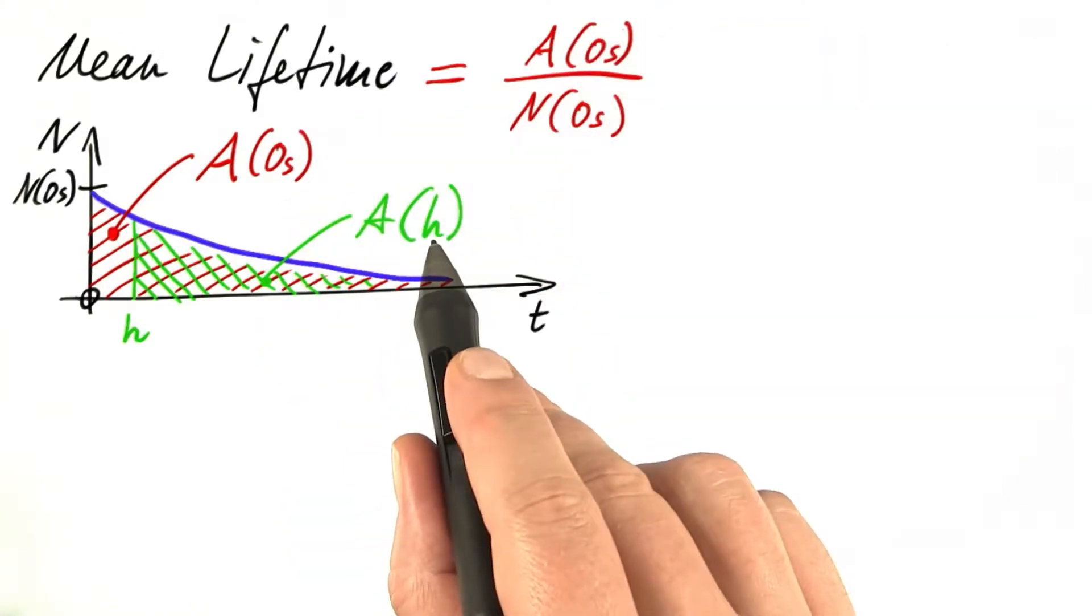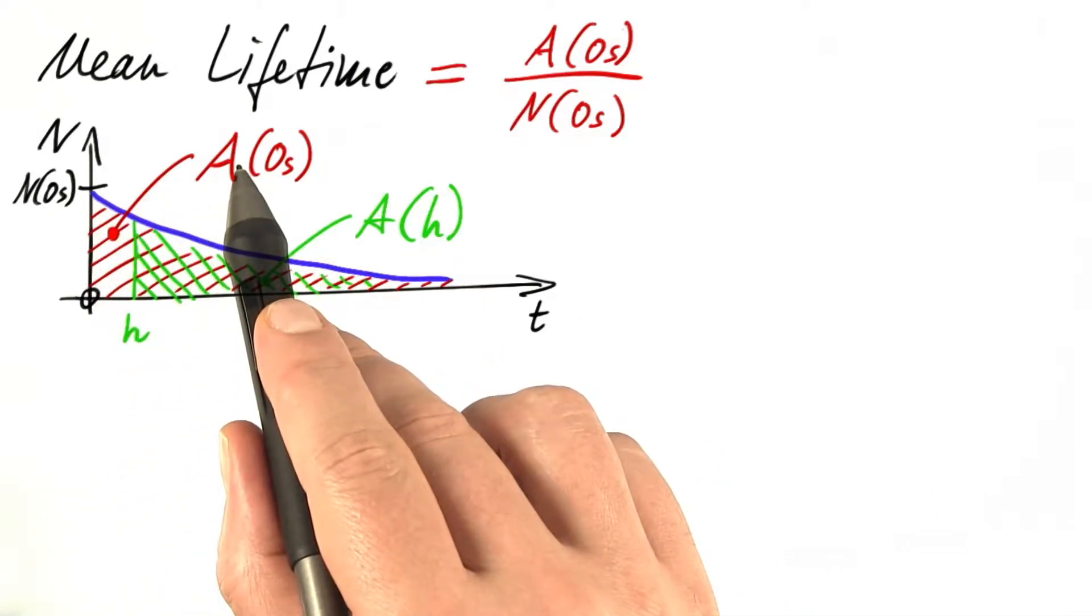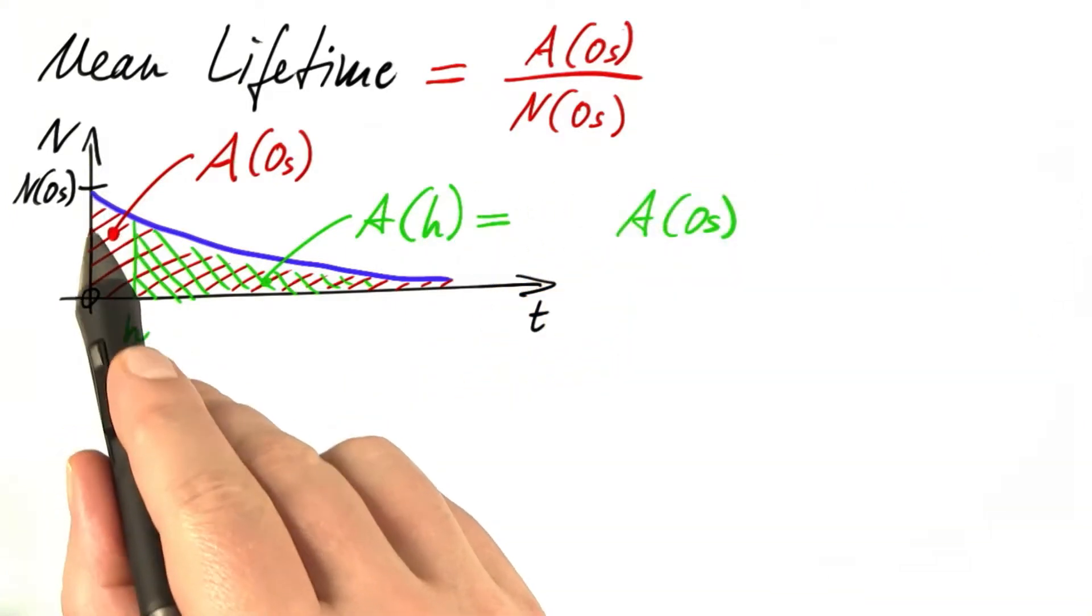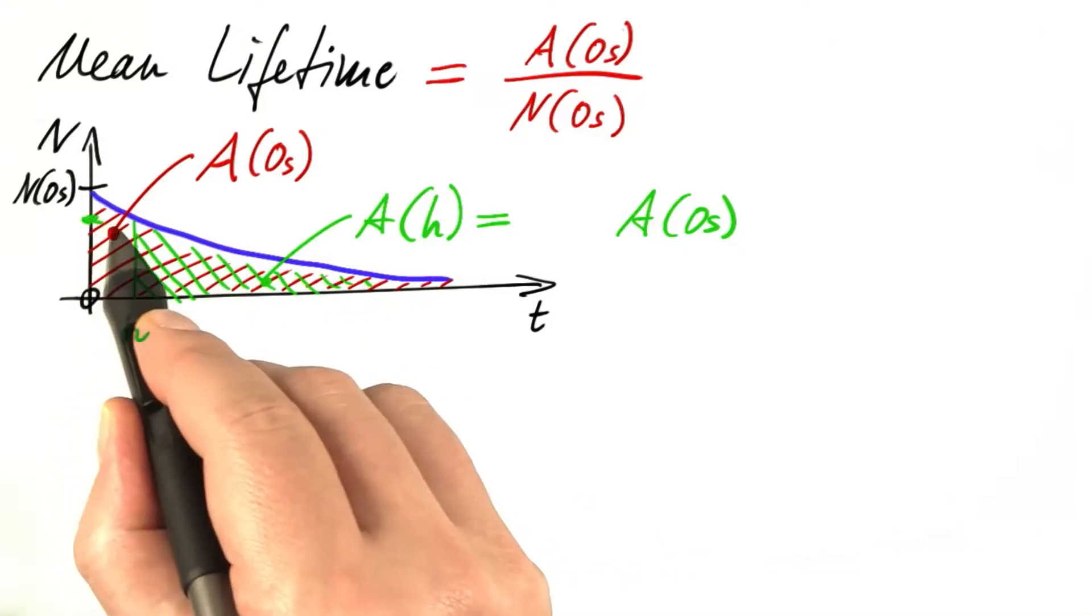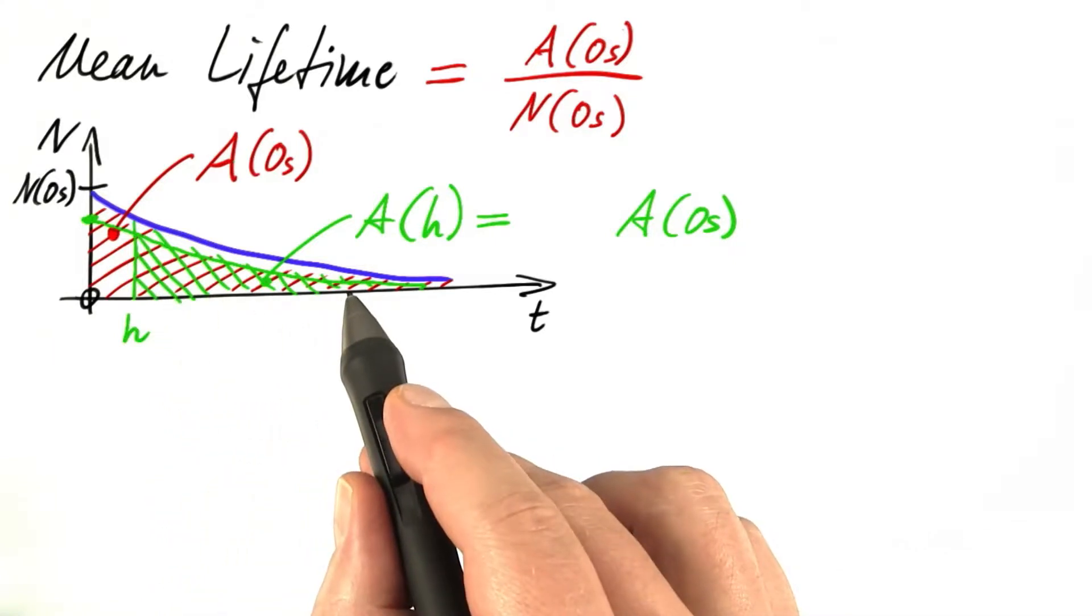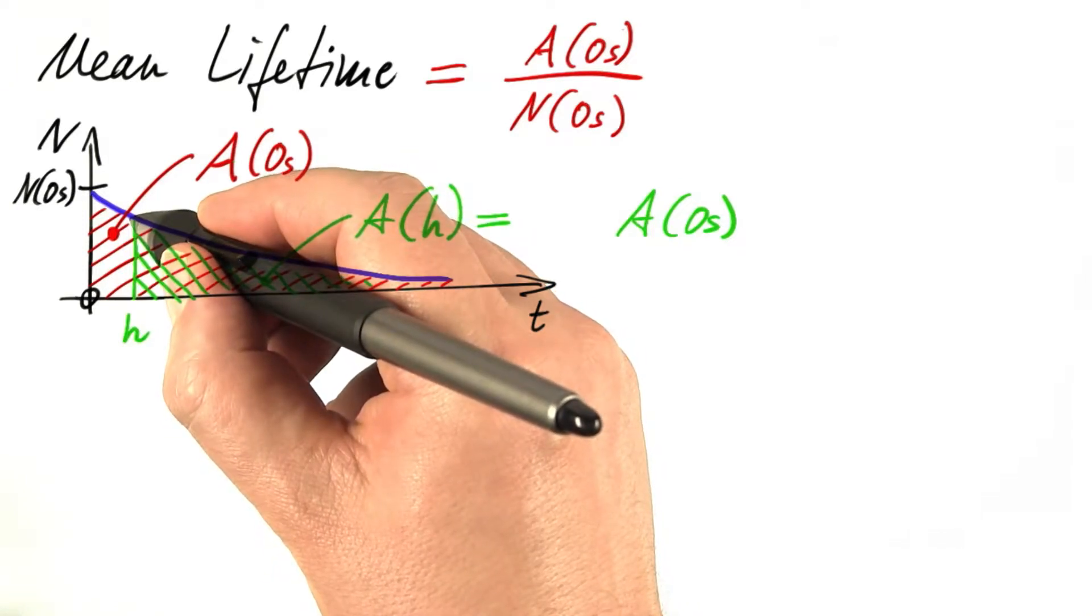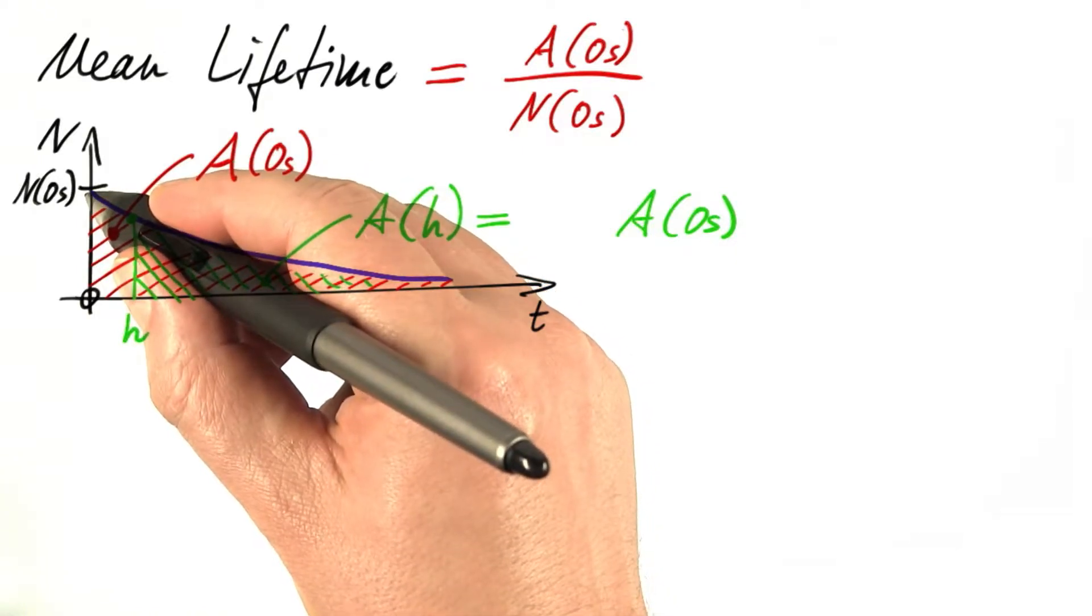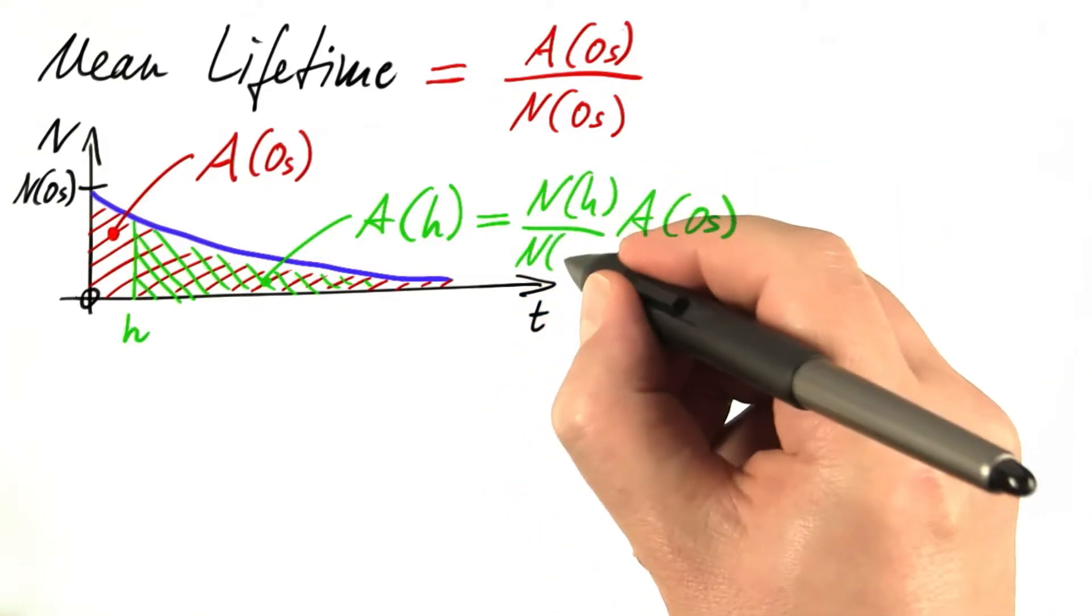The funny thing about A of h is that it's a scaled-down version of that original red area. If you multiply with the right factor, you're going to turn that red area into that green area. The right factor is easy to figure out. It's the ratio of the number of particles present at time h to the number of particles present initially. So this is n of h over n of 0 seconds.